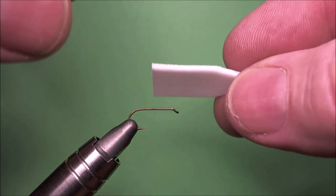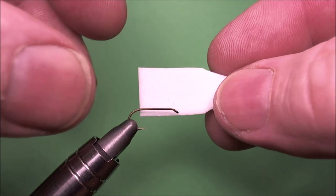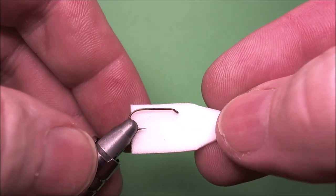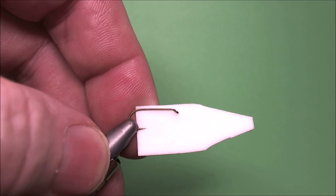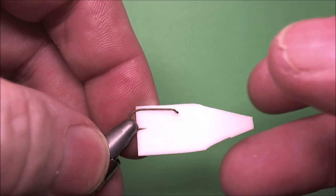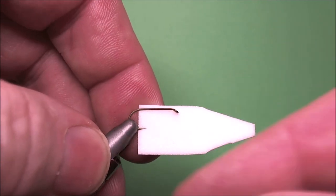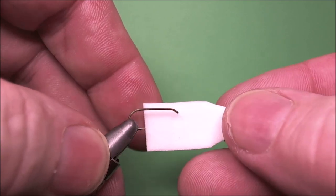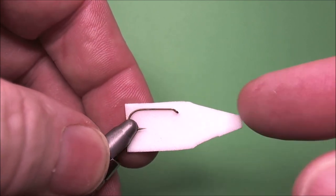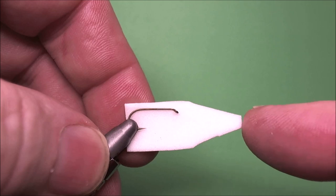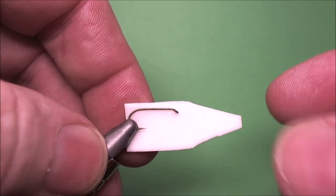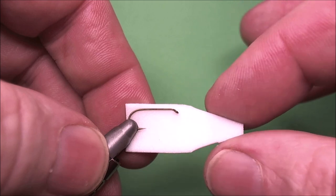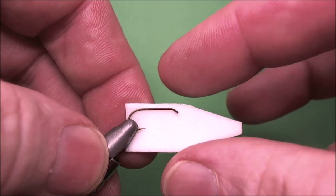And what we want is a bit of 1mm foam which is approximately twice the gape of the hook. This one's a little bit longer, a little bit further. And similarly approximately twice the length of the hook. Bigger is better. And I've tapered off the top third or so.